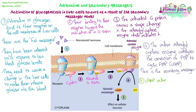What cAMP does is activate a protein kinase enzyme cascade. Protein kinase enzymes form a group where one enzyme is activated, which causes something to happen, which triggers another enzyme, and so on. Ultimately, this leads to the breakdown of glycogen into glucose — glycogenolysis — and glucose is released into the bloodstream. So the binding of adrenaline or glucagon, through this system, has triggered change in the cell, resulting in the response of increasing blood glucose level.